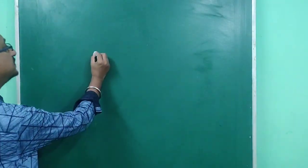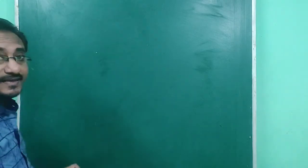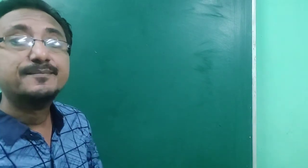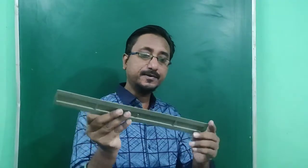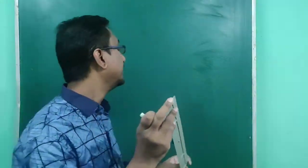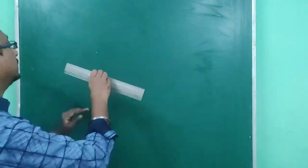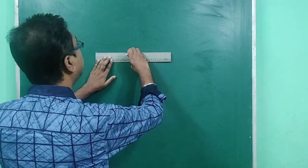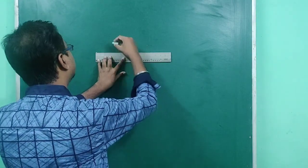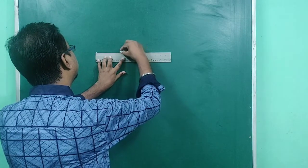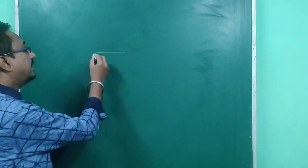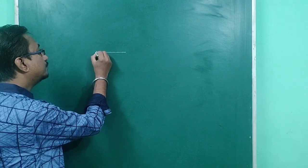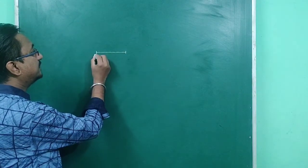For drawing a line segment, first we need a point. Suppose I have to draw a line segment of six inches. I have a graduated scale, and my six inches is marked here. This is the line segment of six inches. A line segment has two endpoints, and we will represent this line segment as AB.